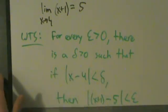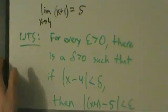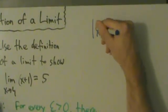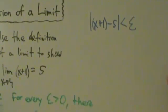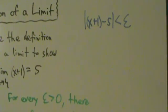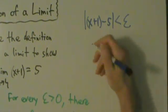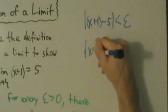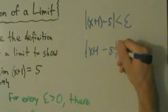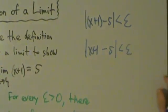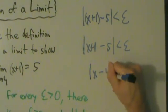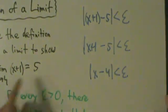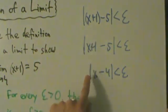So once we've written this down, we're going to come back up and say: we want to have absolute value of x plus 1 minus 5 less than epsilon. Let's go ahead and simplify this. First, we can drop these parentheses, so we're just going to have absolute value of x plus 1 minus 5 less than epsilon. Now we can simplify a little more: x plus 1 minus 5 is x minus 4. So we've reduced this condition to that.